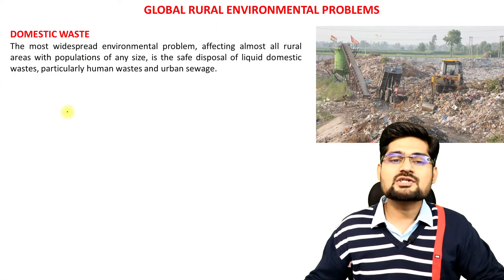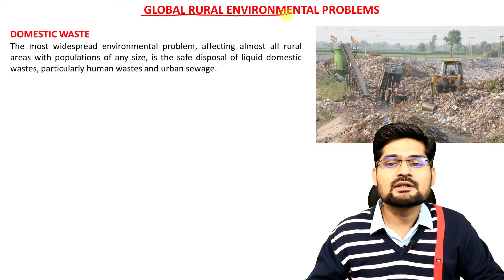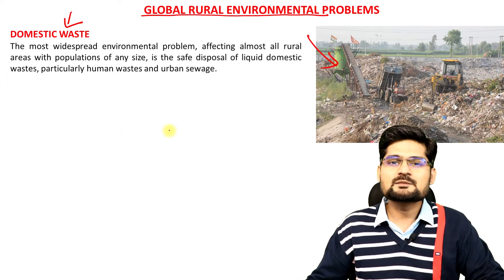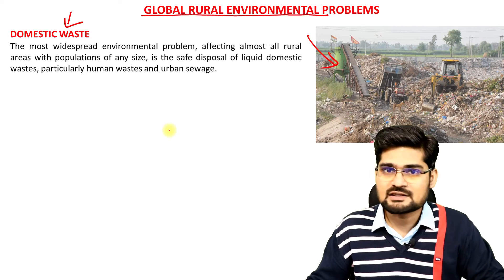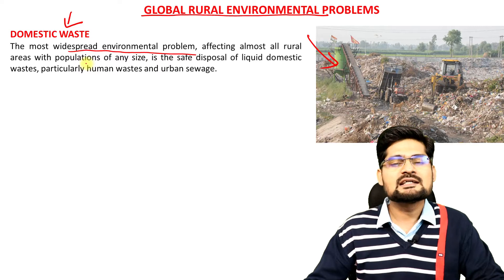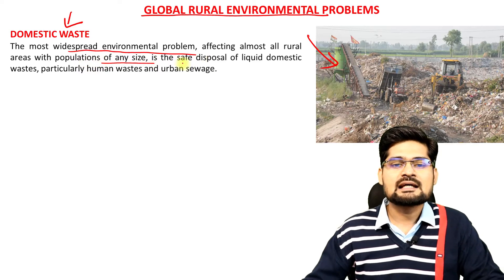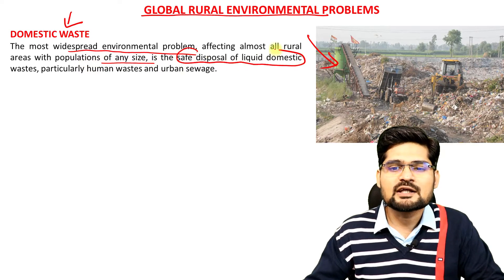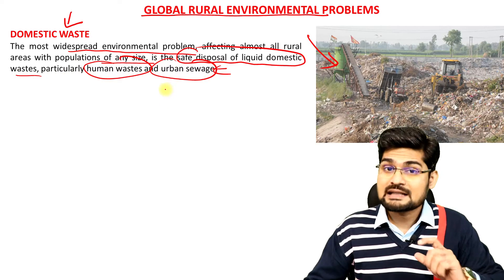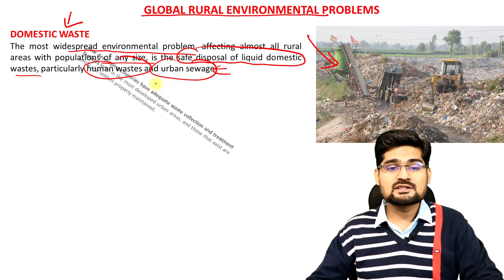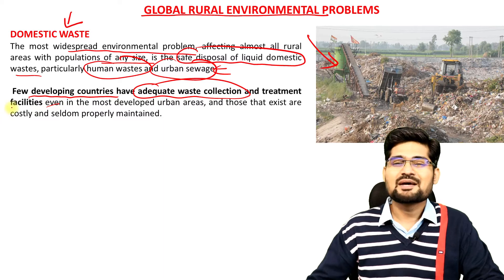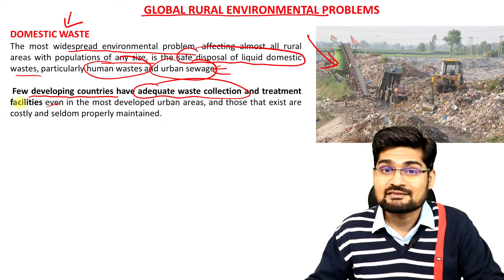Some of the major chunks in global rural environmental issues — for example, domestic waste. Waste disposal and management has been one of the major areas of concern across the world. It is the most widespread environmental problem, varying with population size, and safe disposal of liquid domestic waste, particularly human waste and urban sewage, is still to be taken care of. Few developing countries have adequate waste collection and treatment facilities, but most don't.